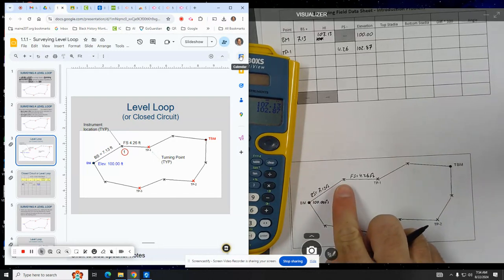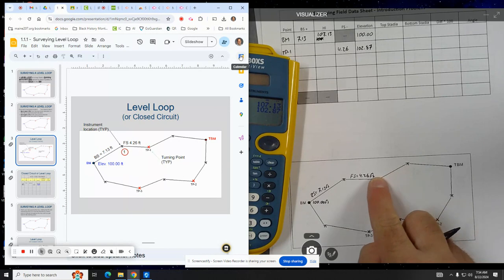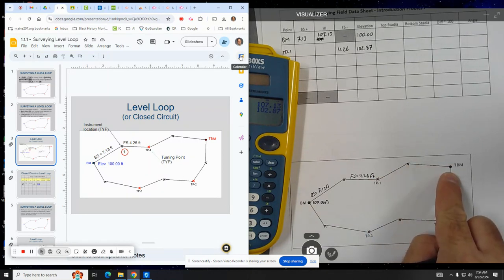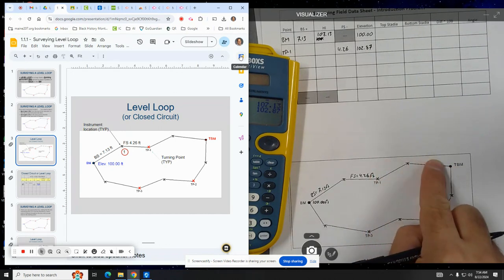And then what you would do is you would pick up, you would leave the rod here. The person holding the rod stays here. And then it's just like they're leapfrogging each other. The instrument then moves to the next thing. You take a back sight to the rod and then you move the rod over to here. So the rod would leapfrog over that to there.